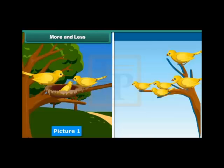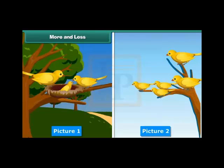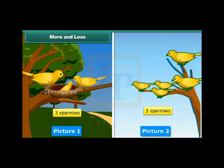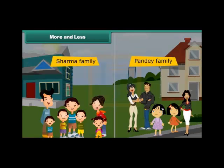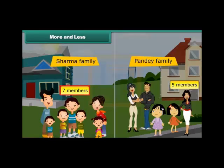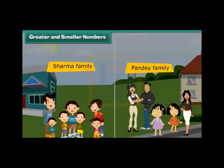More and less. Look at these two pictures. Which of them has more sparrows? The first picture has 3 sparrows and the second picture has 5 sparrows. Therefore, picture 2 has more sparrows than the first. Look at these two pictures: on the left is the Sharma family and on the right is the Pandey family. Sharma family has 7 members and Pandey family has 5 members. Therefore, Sharma family has more members.